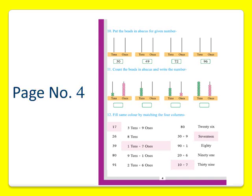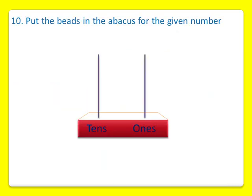In question number 10, we have to put the beads in the abacus for the given number. So let's take a value 72. We will put two beads in the one's abacus stick and seven beads in the ten's abacus stick.